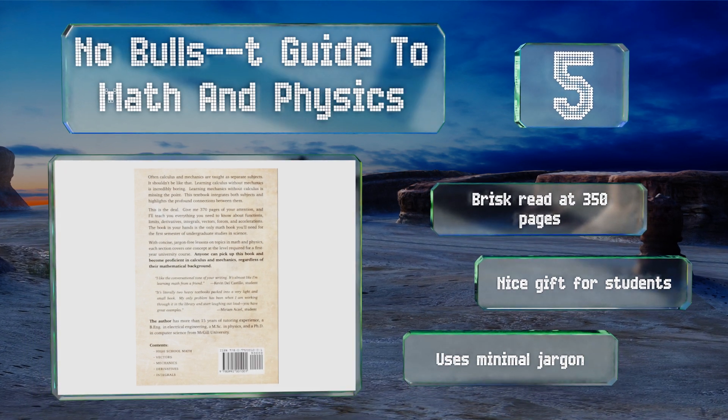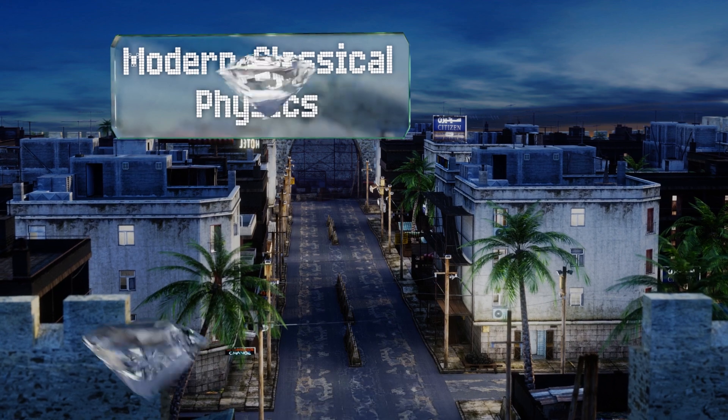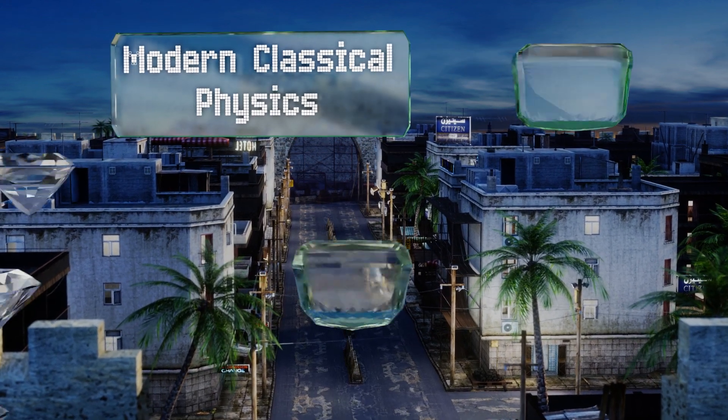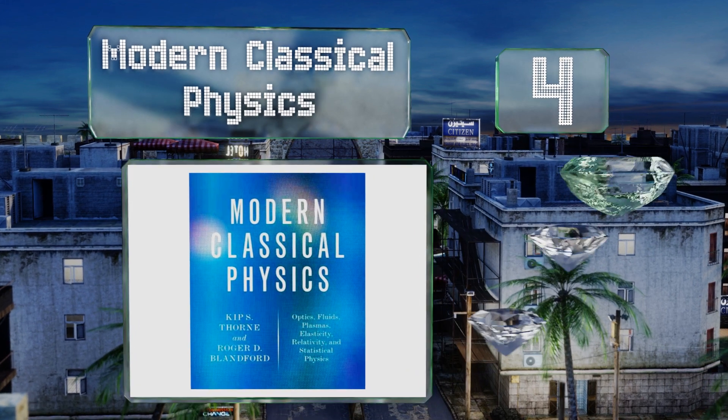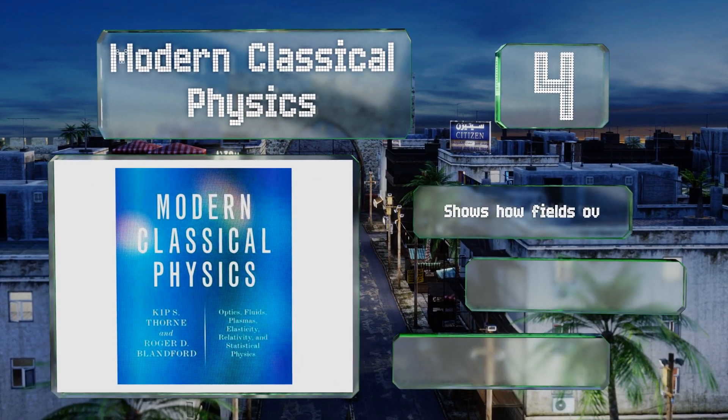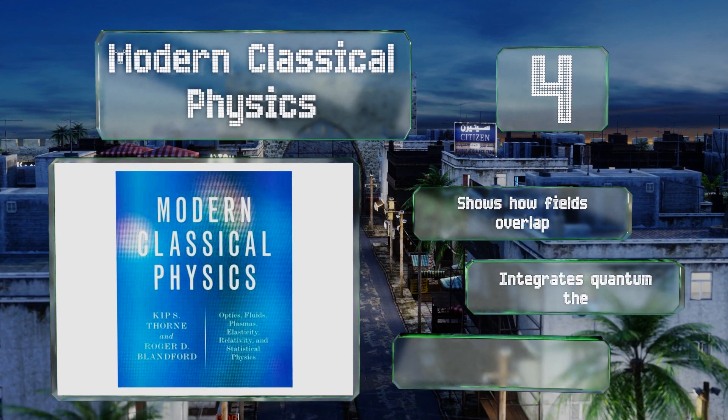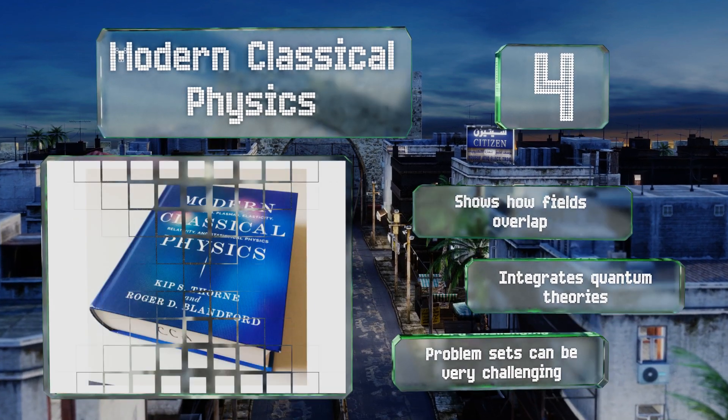At number four, Modern Classical Physics is written by a pair of legends in the sciences and is conveniently divided up into six of the discipline's constituent parts. That makes this a smart choice for undergraduates who might need help finding a specialization. It shows how fields overlap and integrates quantum theories. However, the problem sets can be very challenging.